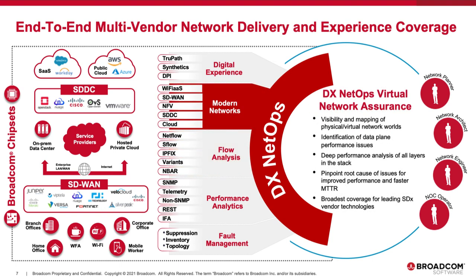All of that fault, performance, and flow capability extends to new software-defined technologies. Taking everything covered for traditional networks and applying it with virtual network assurance to software-defined stacks like Cisco ACI, VeloCloud SD-WAN, Fortinet SD-WAN, network functions virtualization, and cloud-based Wi-Fi like Aruba — applying fault, root cause analysis, alarm noise reduction, and collected metrics inside software-defined technologies to understand how they are delivering the user experience.